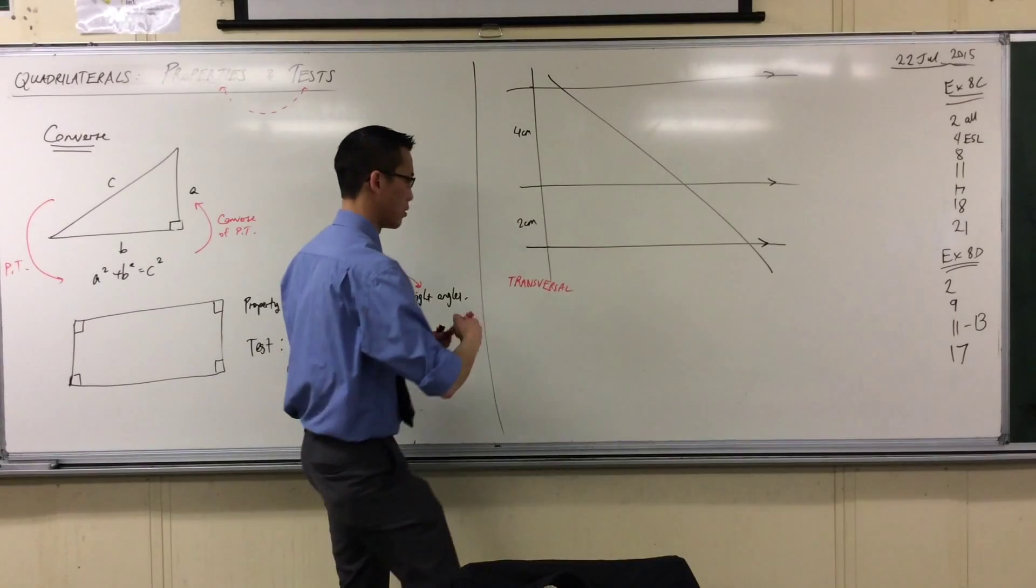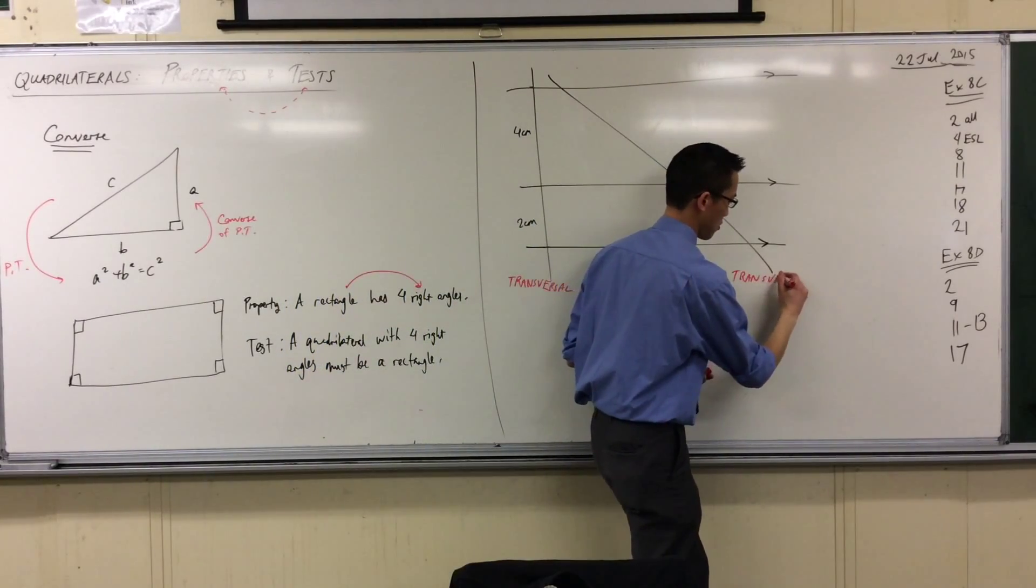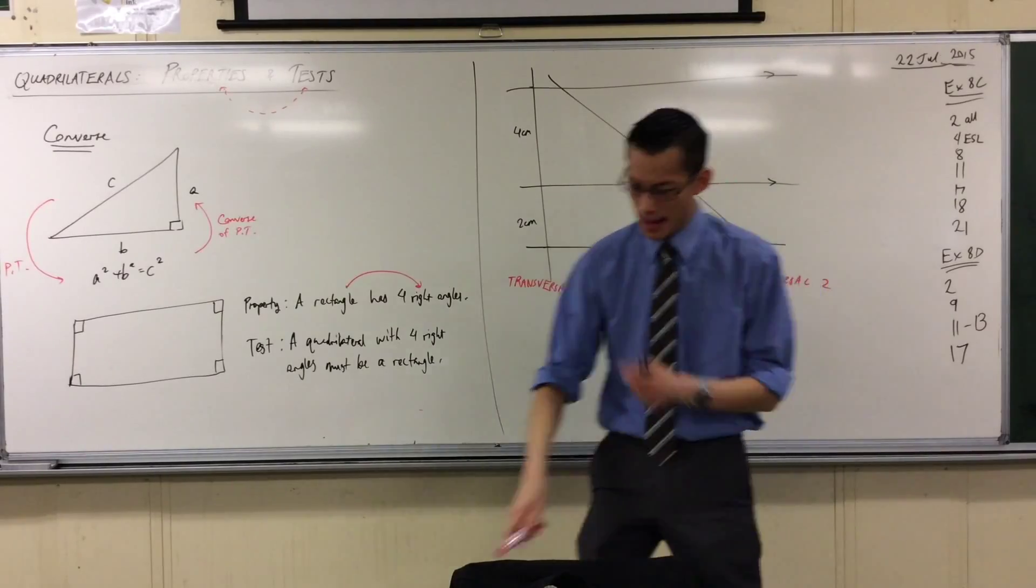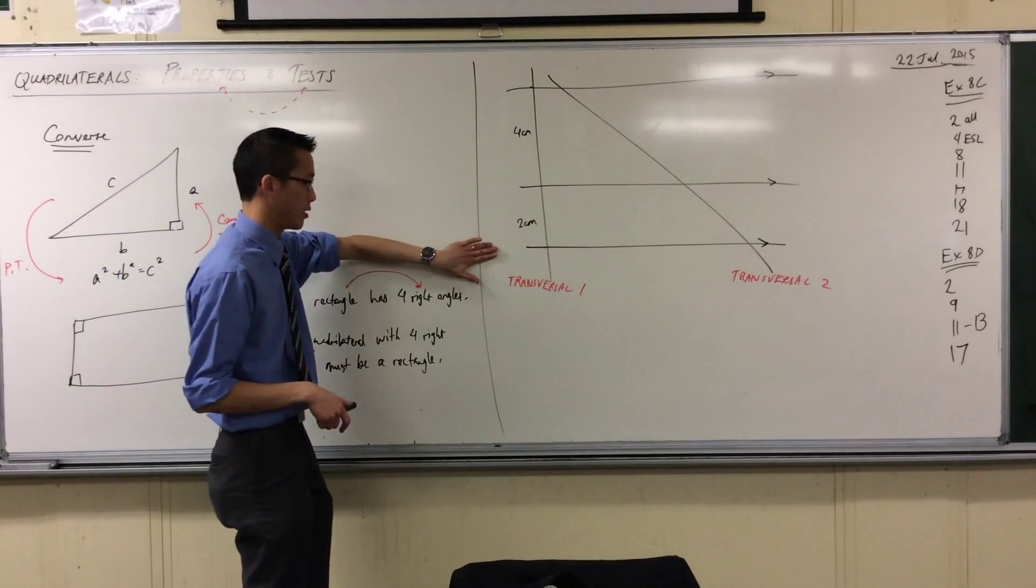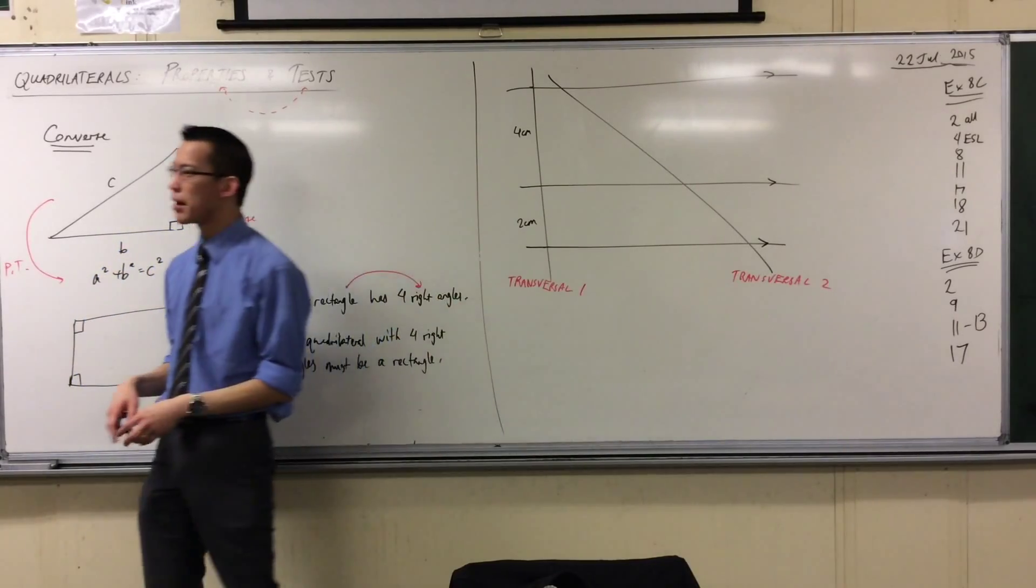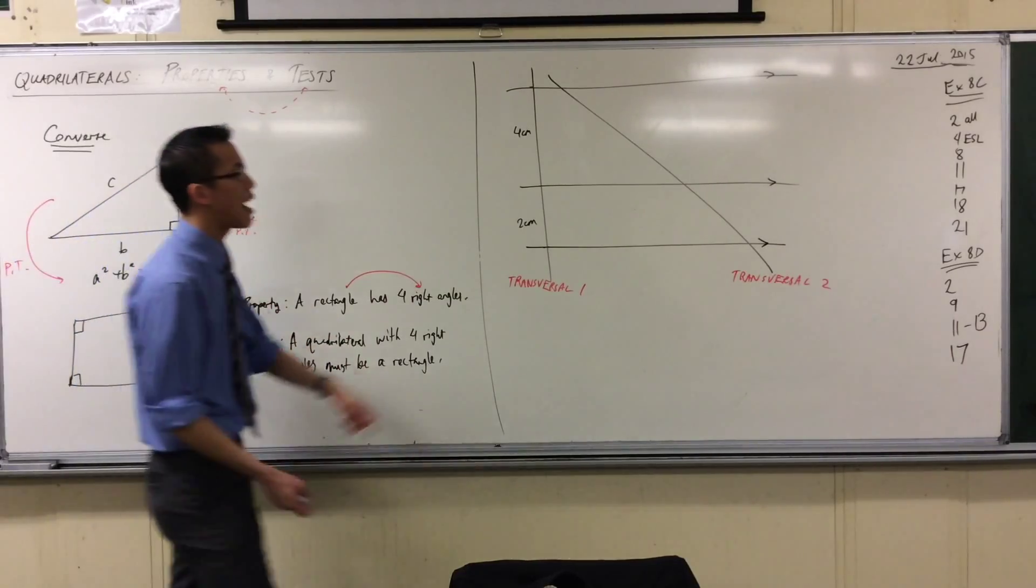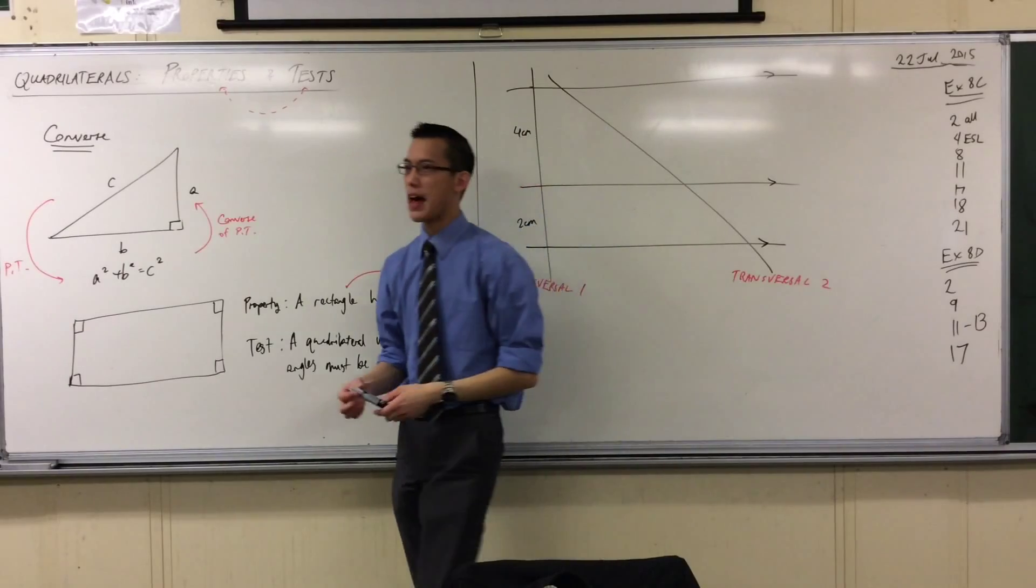I'm going to call this transversal one and transversal two. Now you remember we started this thing off by saying four centimeters, two centimeters. Now you will have a bunch of other second transversals. I would like you to measure out these same portions of that line.